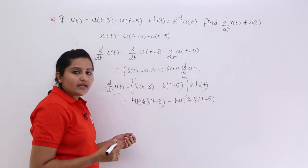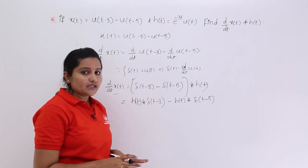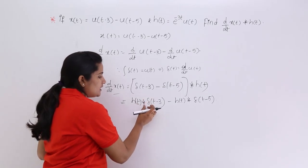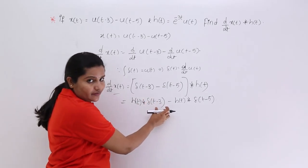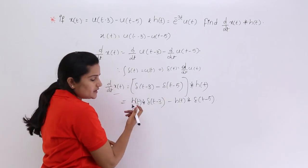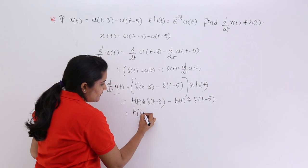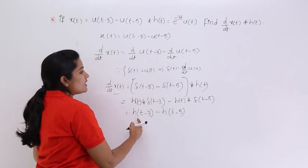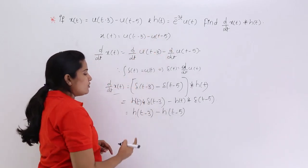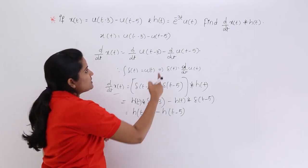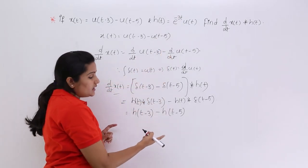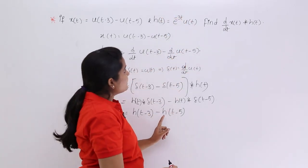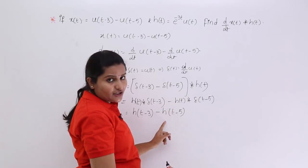Using the shifting property of convolution — when a signal is convolved with a shifted impulse, the signal takes that shift — h(t) convolved with δ(t-3) becomes h(t-3), and h(t) convolved with δ(t-5) becomes h(t-5). So the result is h(t-3) minus h(t-5). Substituting t-3 and t-5 in place of t gives us the shifted versions of h(t).